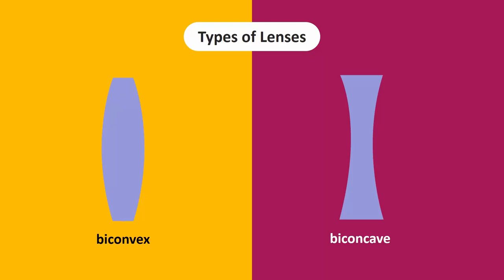In a biconvex lens, the two spherical surfaces are curved inwards. In a biconcave lens, they are curved outwards.